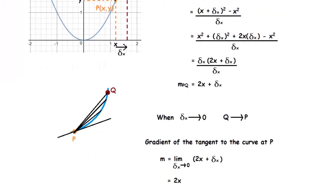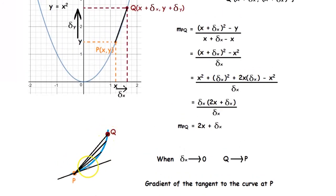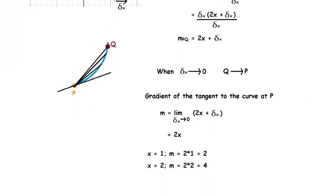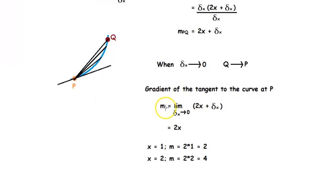Watch what happens when the point Q moves closer and closer to the point P. When Q approaches P, the chord PQ eventually becomes a tangent at the point P. Basically, delta x tends to 0, and when delta x tends to 0 the point Q tends to the point P. So, the gradient of the tangent to the curve at point P can be given as the limit of (2x + delta x) as delta x tends to 0. Using direct substitution, we get the gradient as 2x.